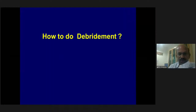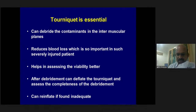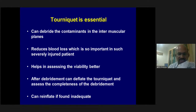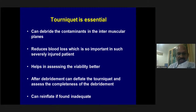Regarding timing of debridement: the traditional teaching of completing debridement within six hours has been well studied and challenged extensively in literature. Current evidence confirms the six-hour rule is no longer valid for open injuries. The efficacy of debridement in removing devitalized tissue is now recognized as the most important factor determining outcome. The first essential step before draping is applying a tourniquet, which helps debride contaminants in intermuscular planes, reduces blood loss, aids viability assessment, and allows post-debridement evaluation of completeness.